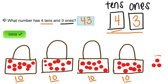So here we have our four tens and then our three ones. So we get 43.